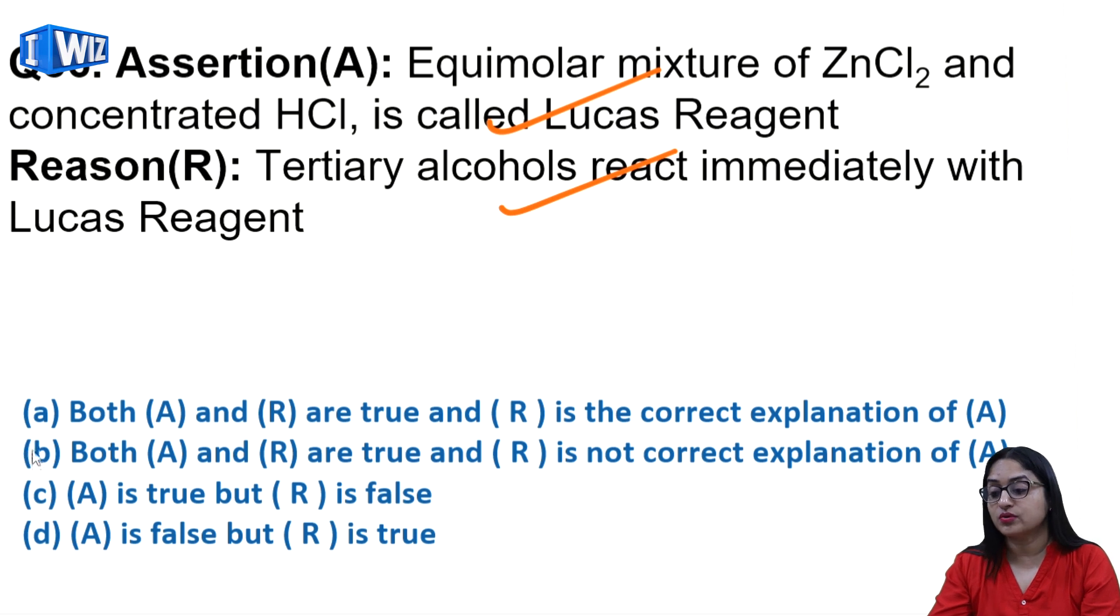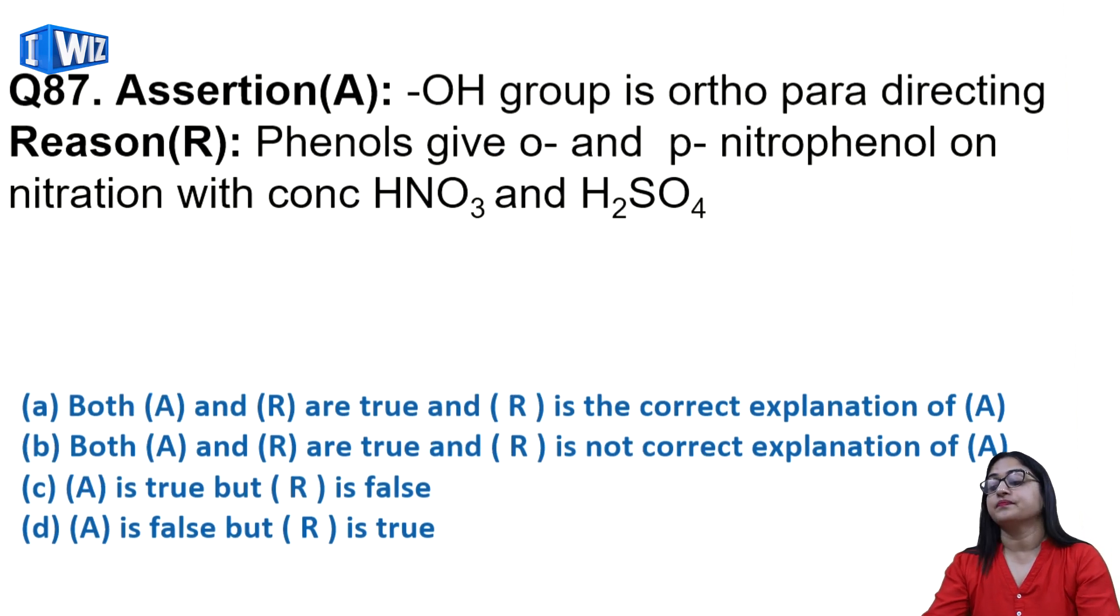87th question: OH group is ortho-para directing - yes it is. And phenols give ortho and para nitrophenol on nitration with concentrated HNO3 and H2SO4. This is also true, but this is not the correct explanation of assertion. So we can say both A and R are true but R is not correct explanation of A.